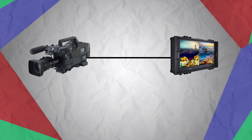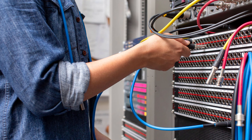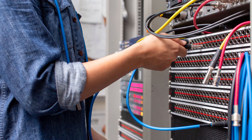Patch systems will get their own video in the future, but they essentially can be used as a breakpoint between a source and a destination. This breakpoint facilitates the ability to quickly change a source going to a destination by basically interrupting that signal's pathway with another source that is available on the patch panel. This is done with a physical cable called a patch cord.